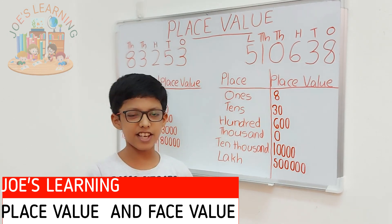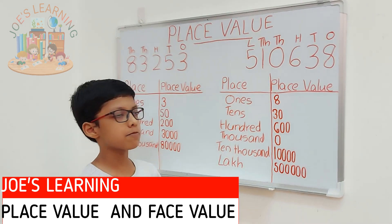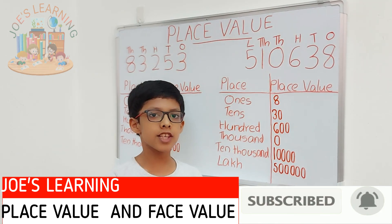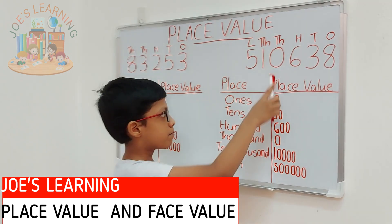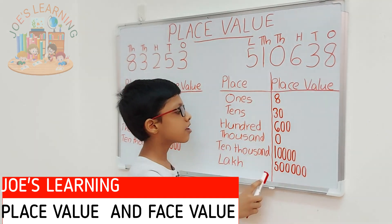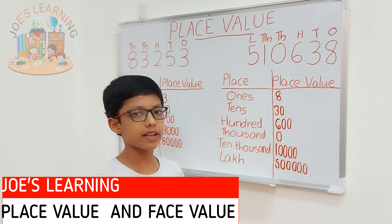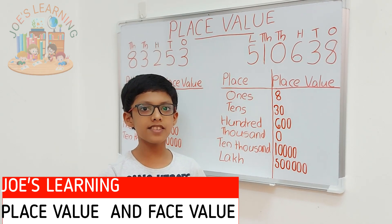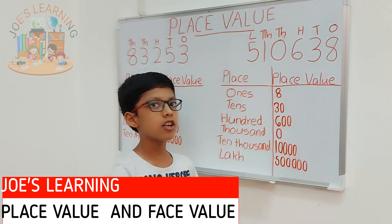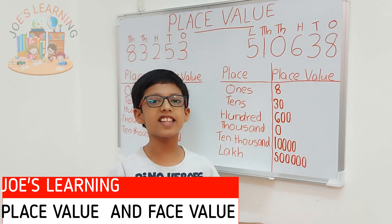Now, let me tell you one easy trick to identify how many zeros are there after that number. For finding out how many zeros there are, we just need to count how many numbers are there after 1 — that is 1, 2, 3, and 4. So, we have to put 4 zeros after 1. And to write the place value of 5, it will be 5 lakh. To count how many zeros to write, it's like this: 1, 2, 3, 4, and 5. So, if you put 5 zeros after 5, you'll easily get the place value of any digit in the number.